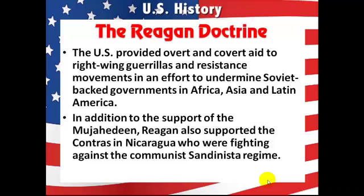The Reagan Doctrine: the U.S. provided both overt and covert aid to right-wing guerrillas and resistance movements in an effort to undermine Soviet-backed governments in Africa, Asia, and Latin America — overt meaning out in the open, covert meaning secret. In addition to supporting the Mujahideen, Reagan also supported the Contras in Nicaragua who were fighting against the communist Sandinista regime.